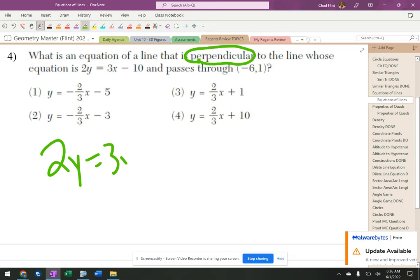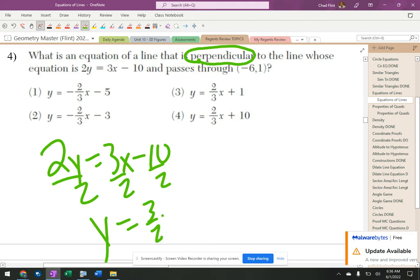So 2y equals 3x minus 10, divide by 2. y equals 3 over 2x, and I don't really care what this is, it's minus 5.